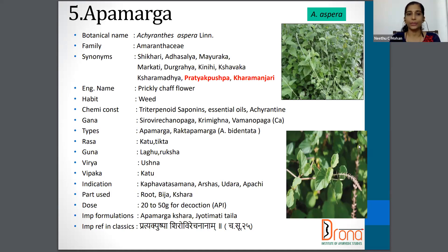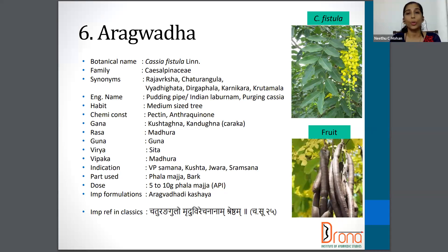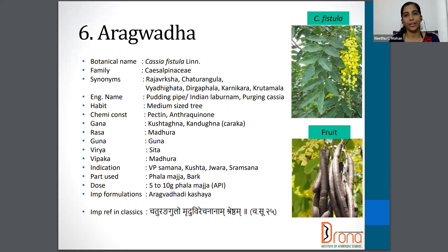The next one is Aragvata. Cassia fistula belongs to the Caesalpiniaceae family. Synonyms are Raja Vriksha, Chaturangula, Karnikara, Krita Mala, Deerga Phala, etc. The English name is Pudding Pipe, Indian Laburnum, or Purging Cassia. The part used is Phalamajja or bark, and if it is Phalamajja, the dosage is 5 to 10 gram as per API.